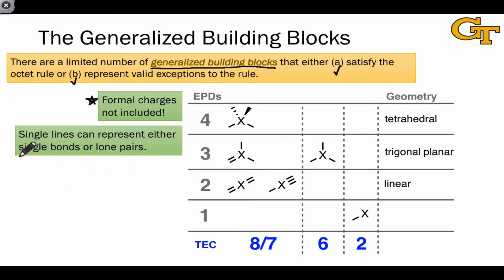Secondly, because this entire system is based on the octet rule, which is grounded in the total electron count around an atom, each single line that you see, which seems to indicate a single bond, is equivalent to a non-bonding or lone pair at that position.